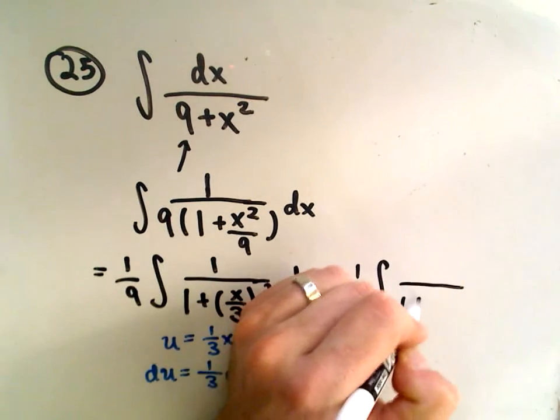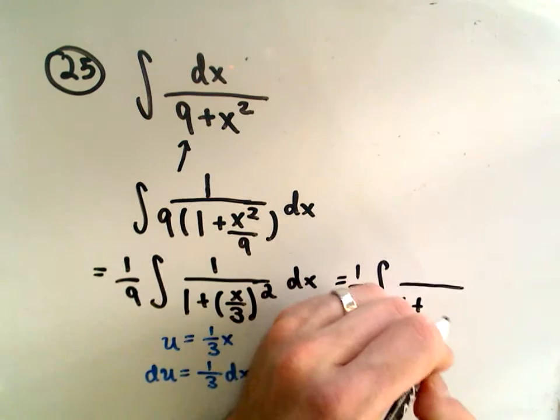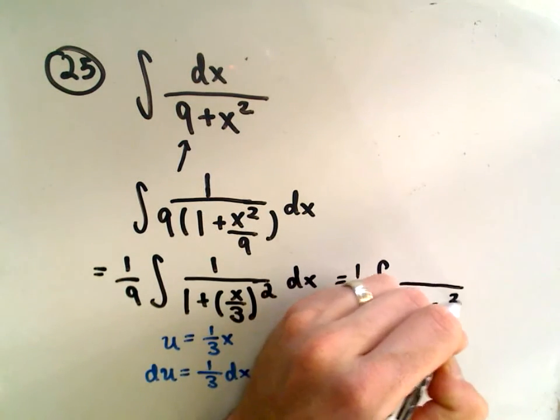I've got 1 plus x over 3, equivalently that's 1/3 x. That's what we're calling u, and that's being squared.